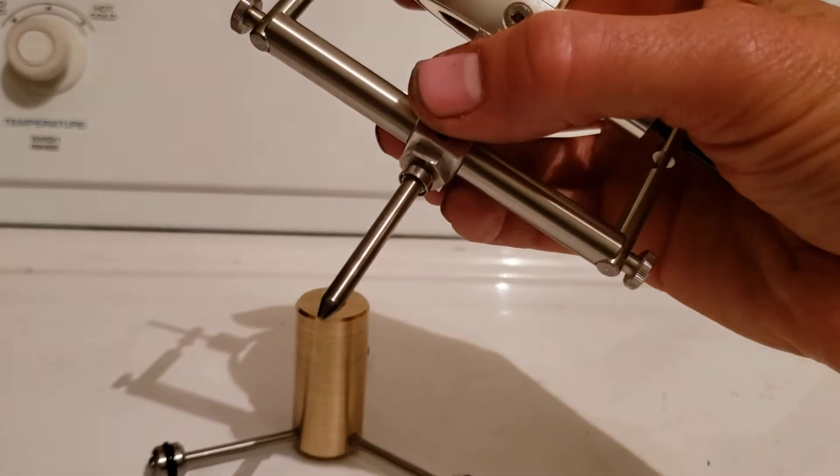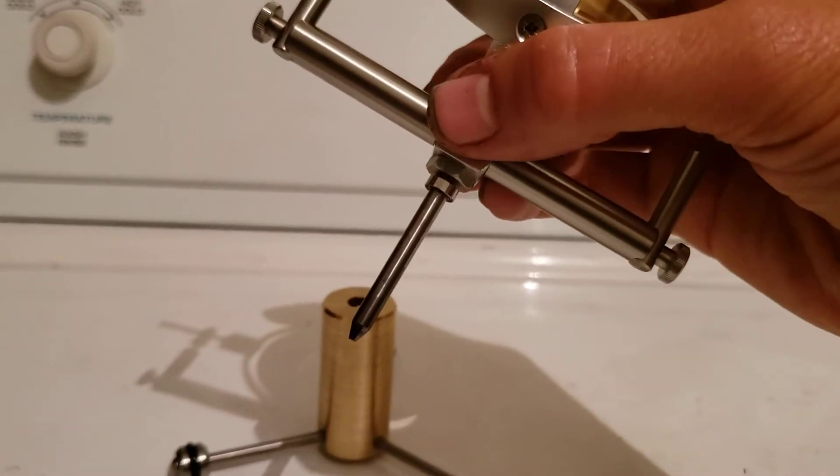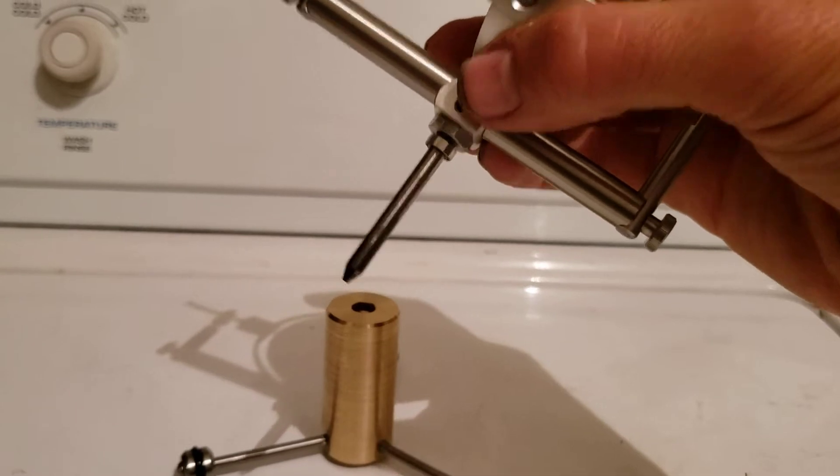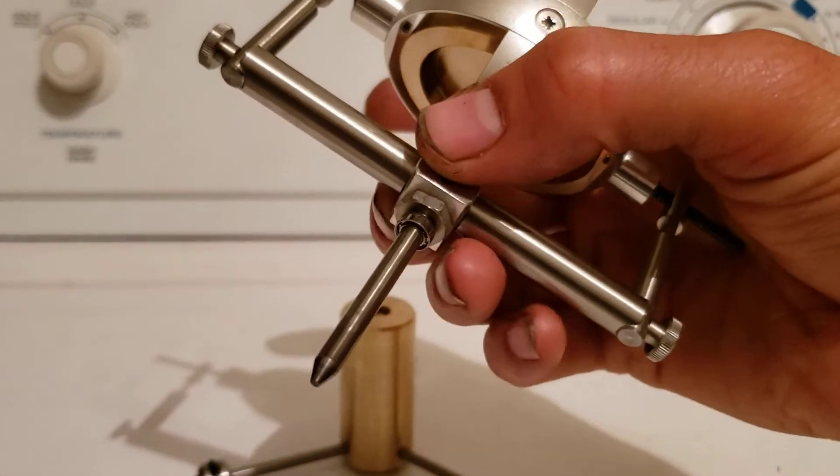There's a tapered pin bearing with rollers to the bottom, balls in the bottom, and then a little regular radial bearing there.